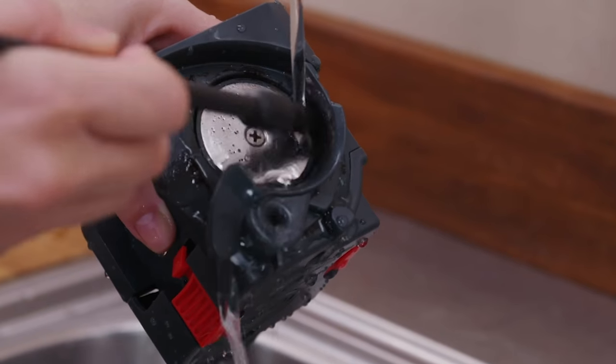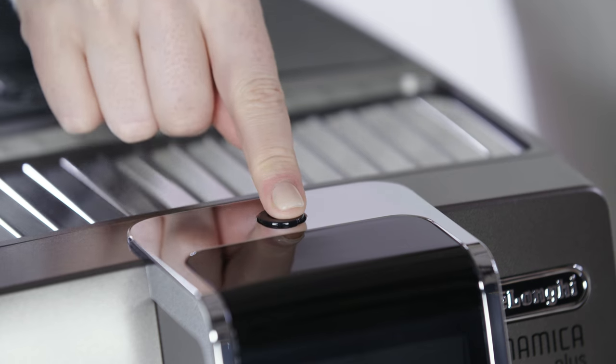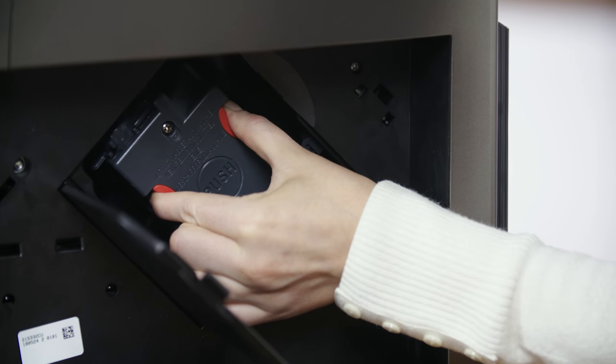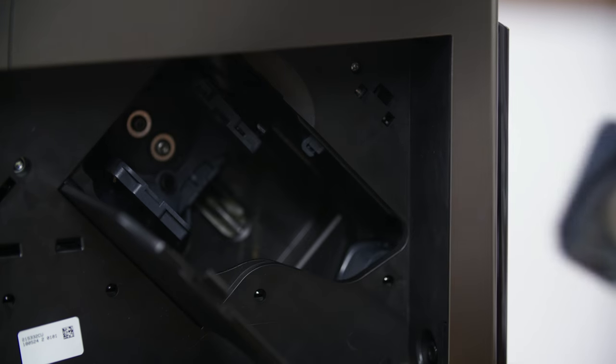When cleaning the infuser, make sure the machine is correctly turned off before you extract the infuser. Press the two colored release buttons inwards and at the same time pull the infuser outwards.